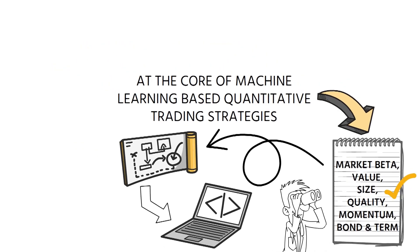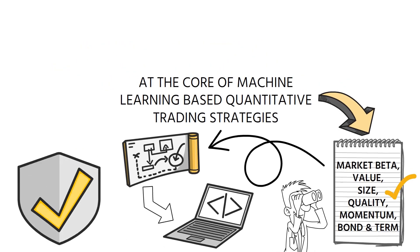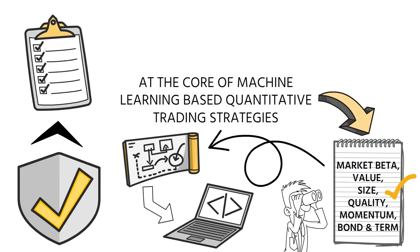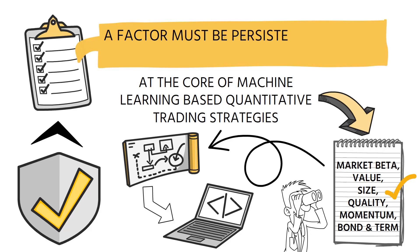To demonstrate the validity of these factors, we evaluate each factor using five stringent criteria, which will be explained next. In short, a factor must be persistent, pervasive, robust, affordable, and logical.